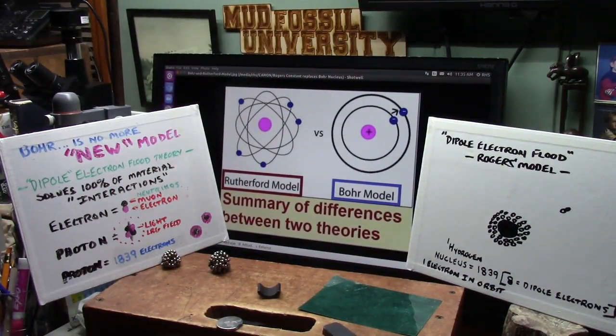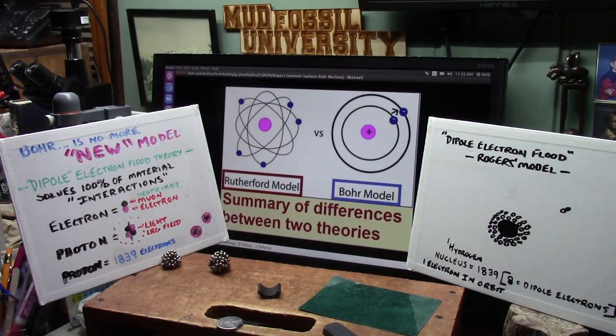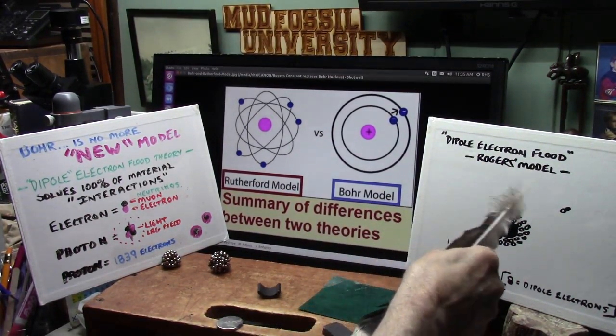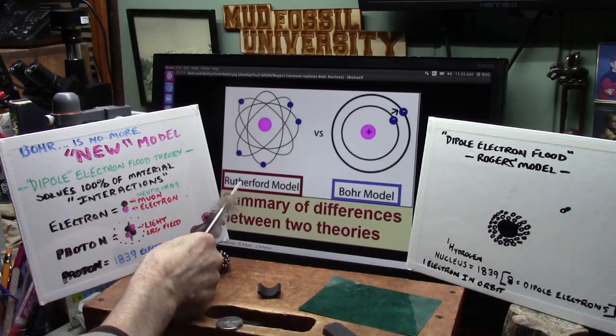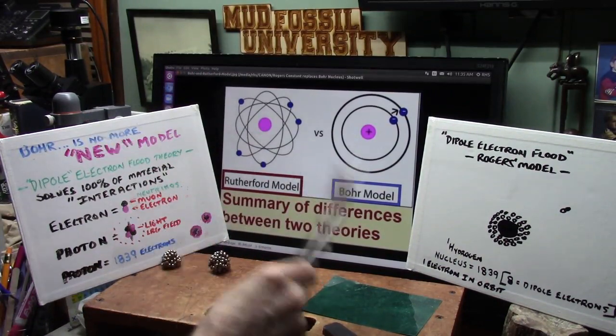Okay, my outstanding friends, this is it. Today I am presenting my theory about dipole electron flood theory. This is Rogers' model. We got the Rutherford model, not correct. We got the Bohr model, way not correct.